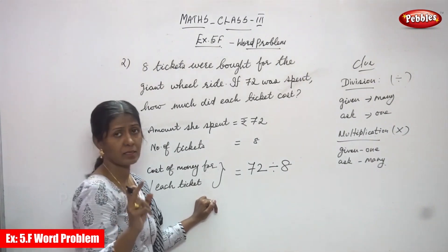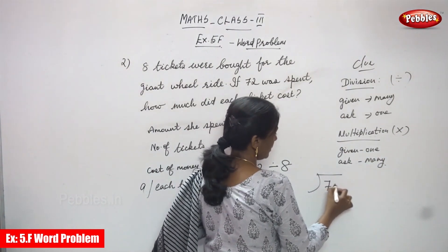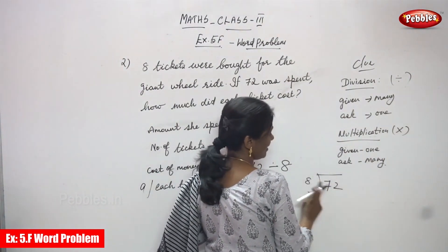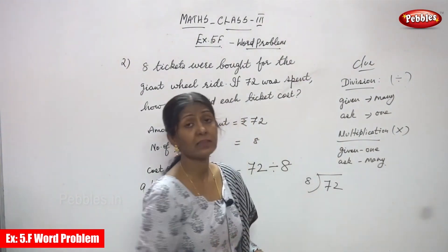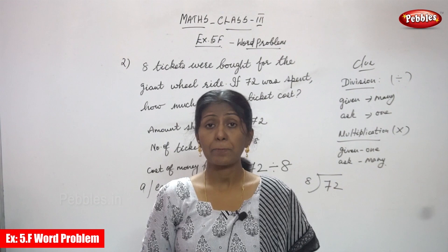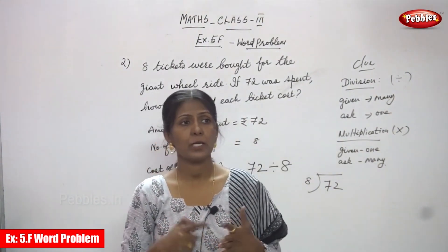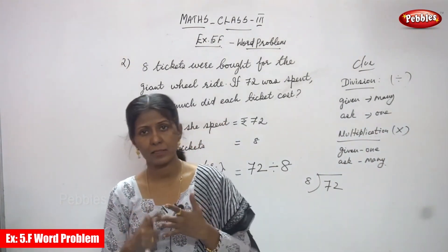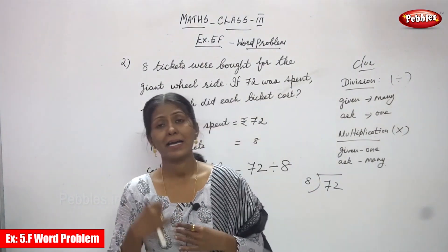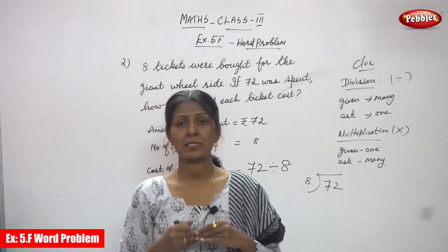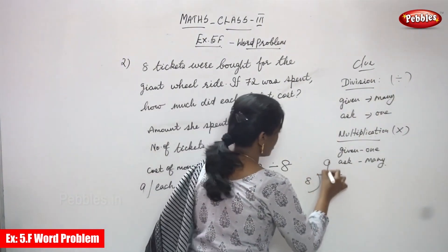8 tickets cost is 72 rupees, so we are going to find out for each ticket. 72 is the dividend and 8 is the divisor. You must use the 8 times table: 8 ones are 8, 8 twos are 16, 8 threes are 24, 8 fours are 32, 8 fives are 40, 8 sixes are 48, 8 sevens are 56, 8 eights are 64, and 8 nines are 72.